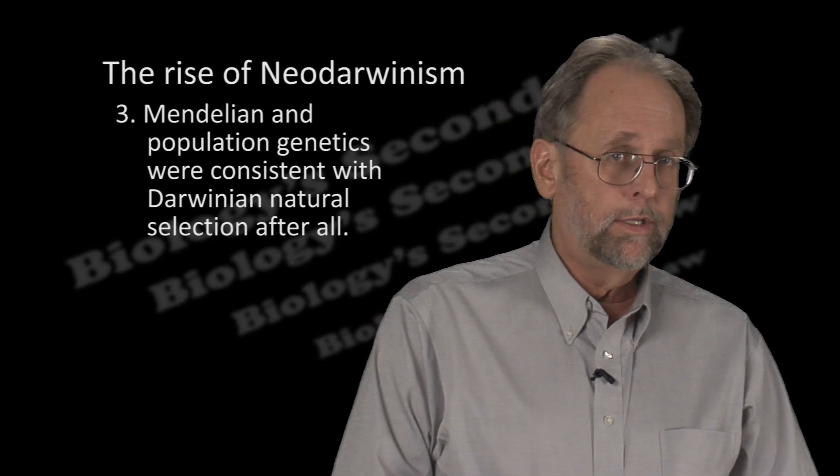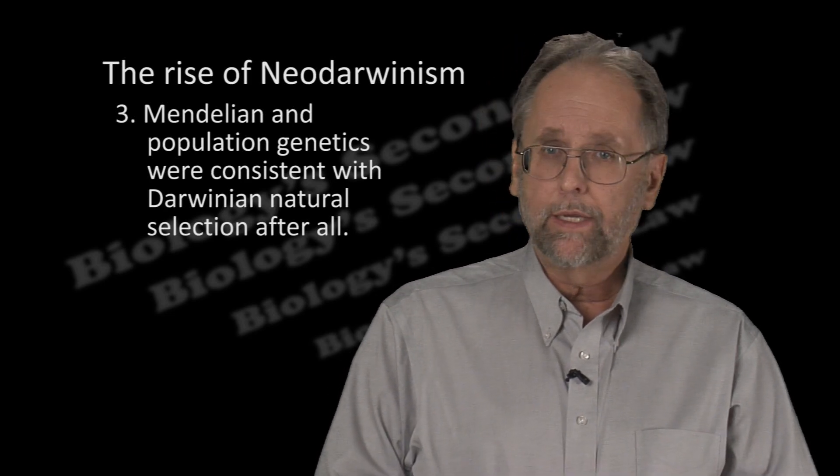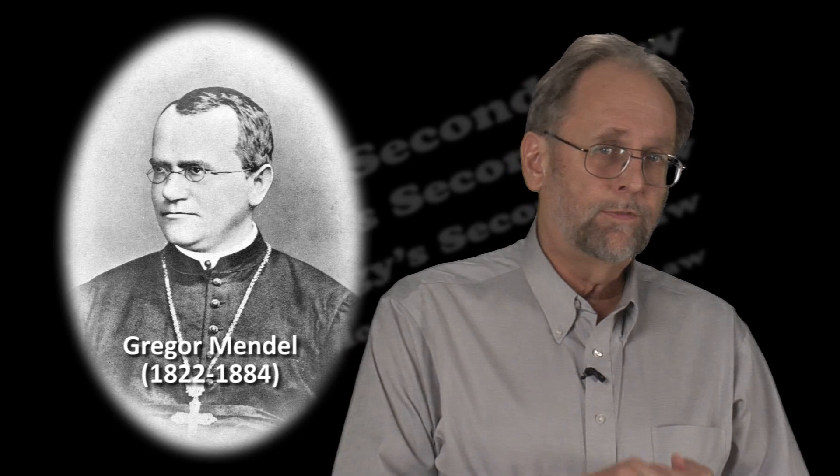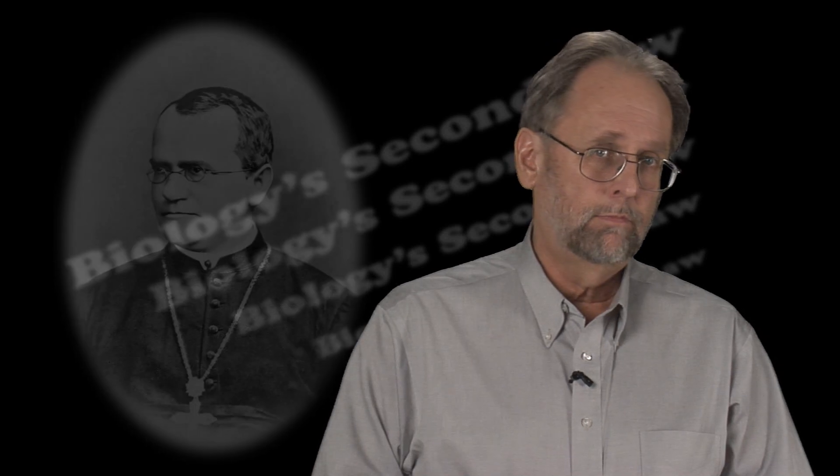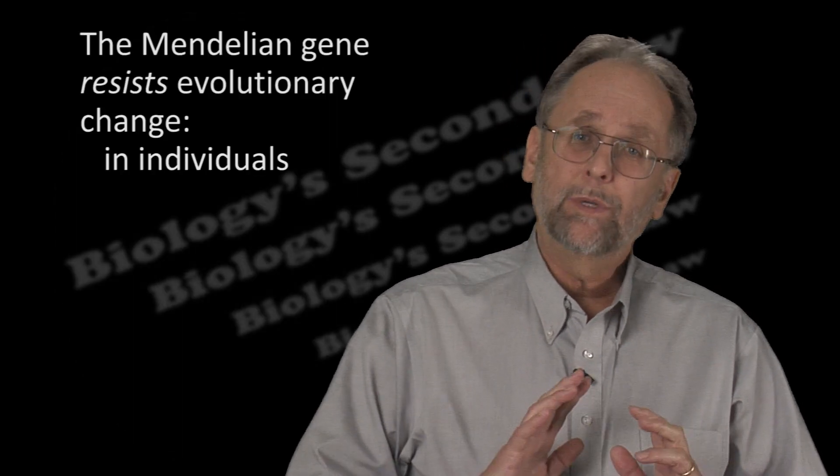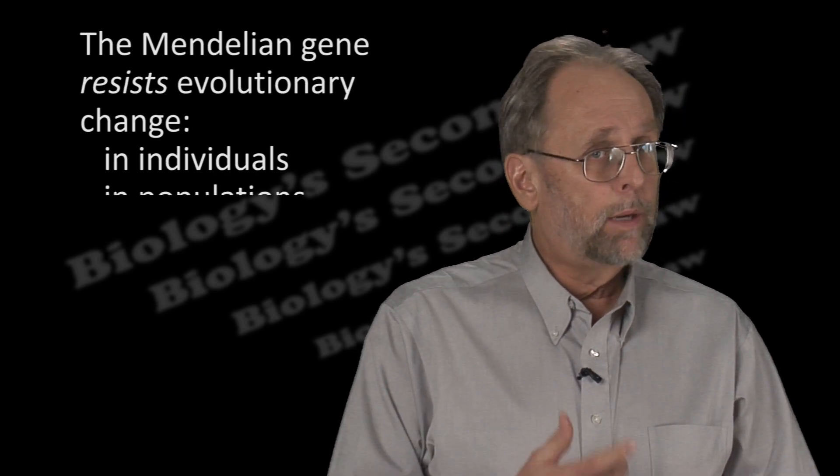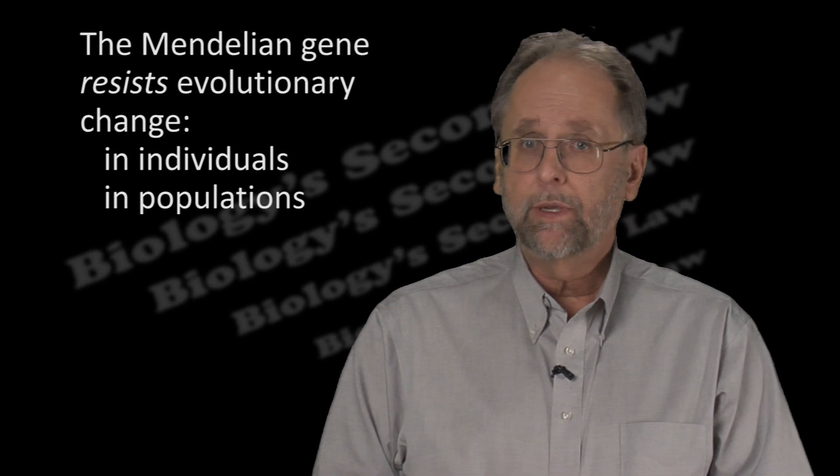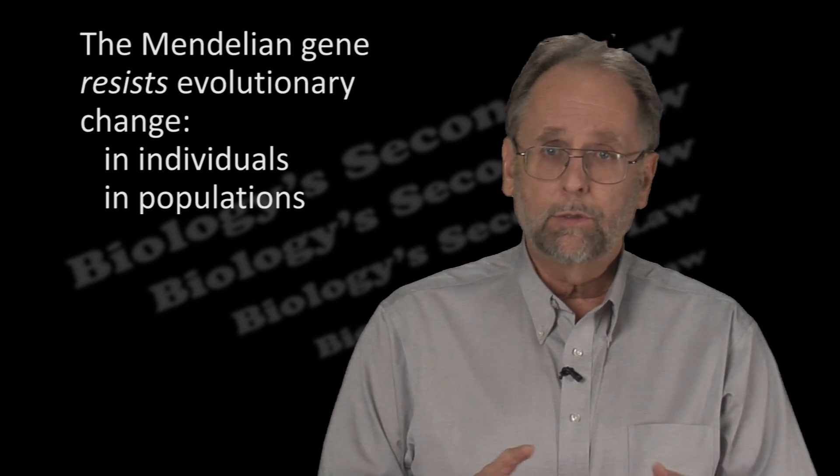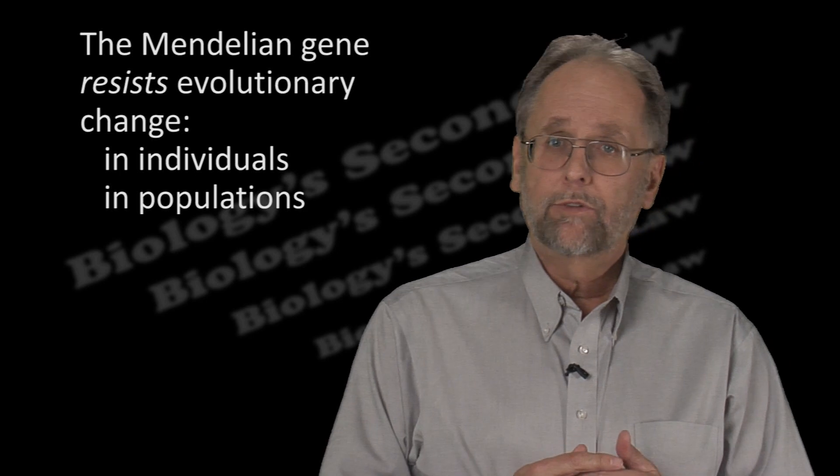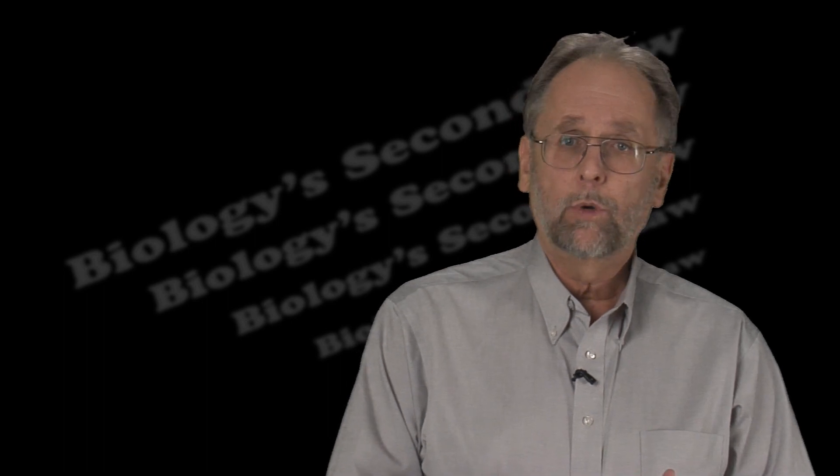The third was the reconciliation of Mendelian genetics and population genetics with natural selection. This one takes a little explaining. When the Mendelian gene was first rediscovered in the 1900s, this was thought by many to be the death sentence for Darwinism, because genes were conservative agents that resisted change, the exact opposite of what Darwin was trying to explain. Population genetics, which was the science of how genes behaved in populations of individuals, said essentially the same thing. In a population of breeding individuals, the mixes of various types of genes would be reset to the same mix at every generation. You may know this as the Hardy-Weinberg equilibrium.